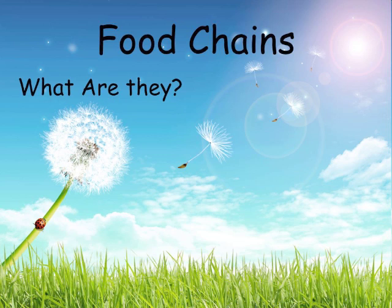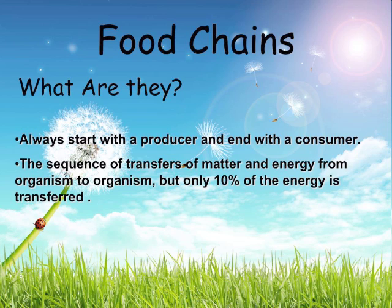Food chains — what are they? Food chains always start with a producer, like a plant. Producers don't depend on other organisms to gain their energy; they use photosynthesis to get energy from the sun. Consumers get their energy from the producers. Food chains are a sequence of transfer of matter between two organisms, but only 10% of the energy is transferred, and the rest is lost in heat and waste.